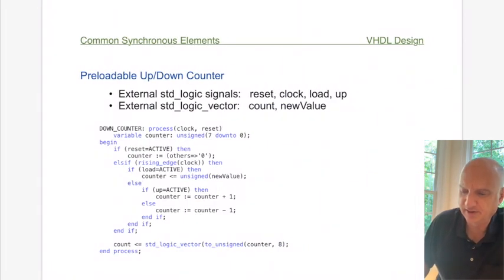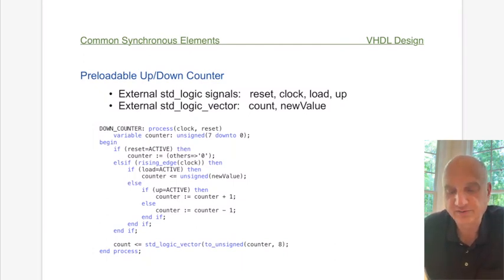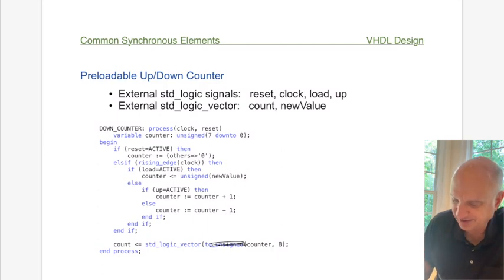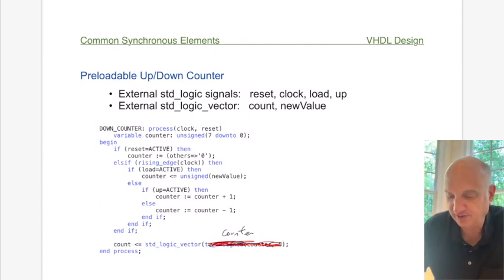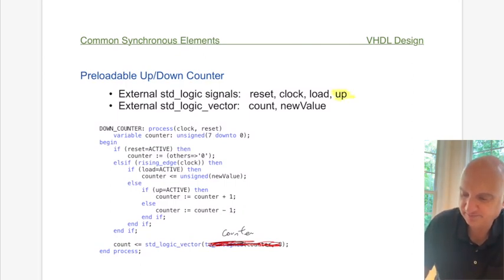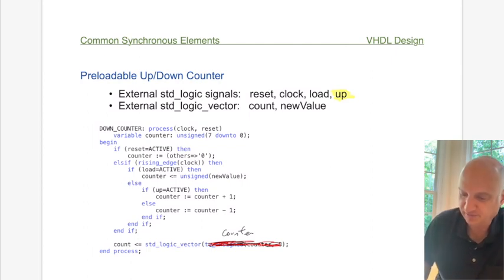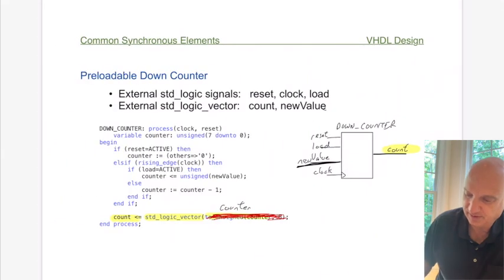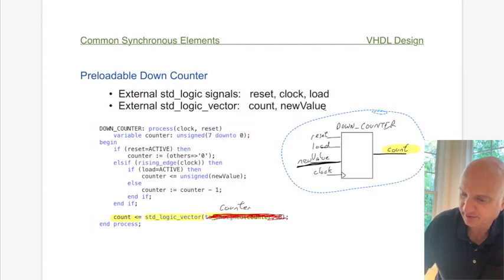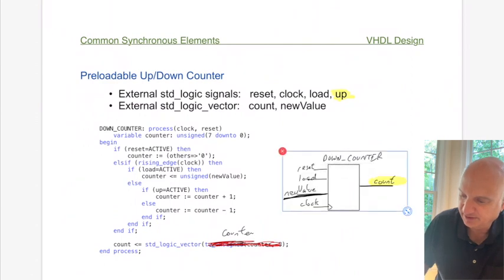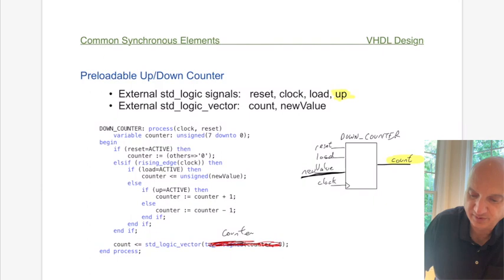Now let's look at a slightly more complex counter — basically the same counter but with an added feature: the ability to specify whether it counts up or down. We've added an input called 'up' to our process. The block is the same as before except we now have the additional 'up' input to determine which direction the counter counts.